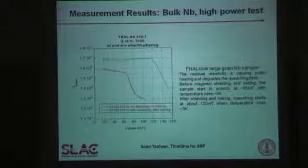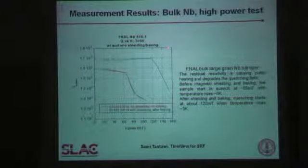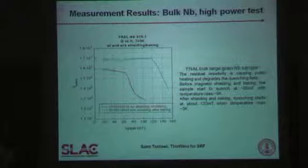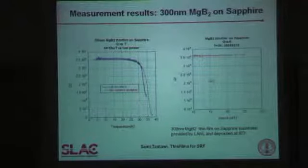We believe 120 millitesla is a reasonable number at 11 gigahertz for this sample, but we are also going to add a small coil to compensate for the residual field, and I suspect that will push the quench limit slightly to 140 millitesla. At that level, at 3.5 tesla, I think that's the expected performance for niobium, and in that case I believe we have a system that is quite reasonable for use in this regard.